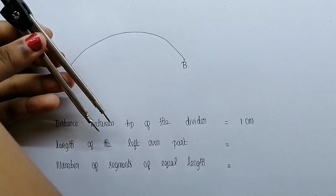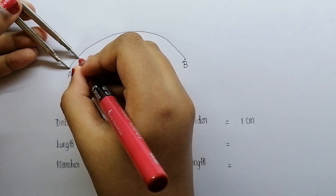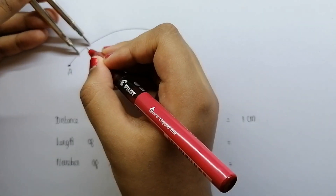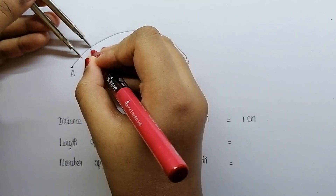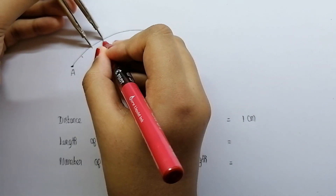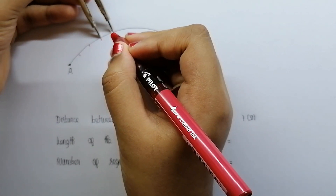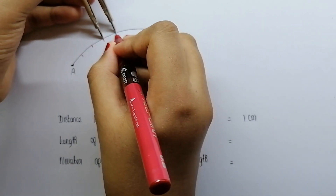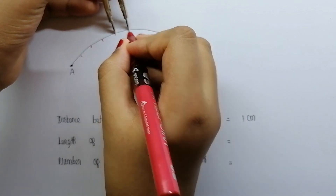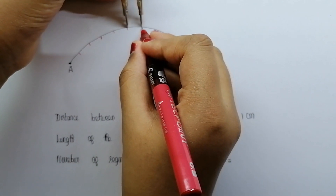Place one tip of the divider at the beginning of the curved line. Place another tip of the divider on the curved line and put a mark at this point. Continue moving the divider forward till the entire curved line is divided into segments of equal length.